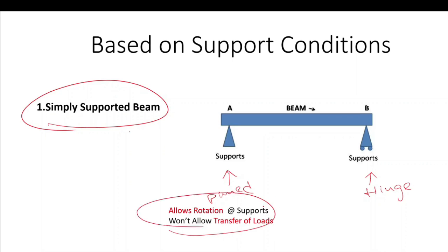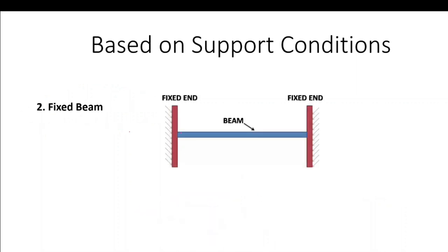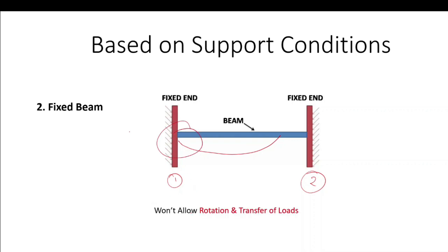A beam which is fixed at both ends is called a fixed beam. The basic characteristics of fixed beams are that it resists bending and also twisting. The basic purpose of fixed beams is to prevent rotation and translation.